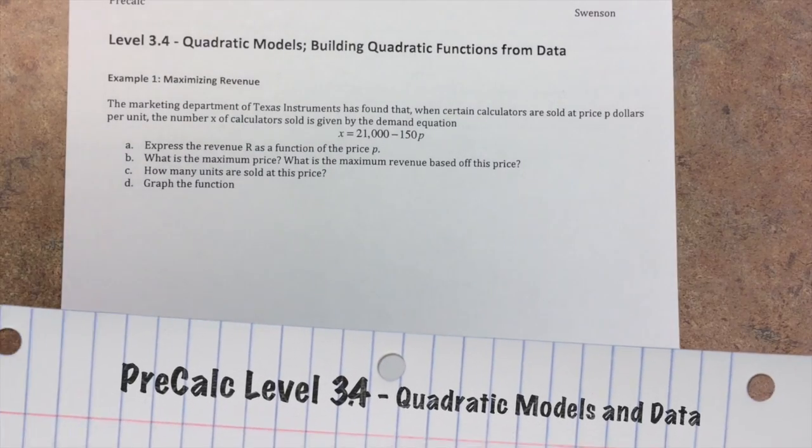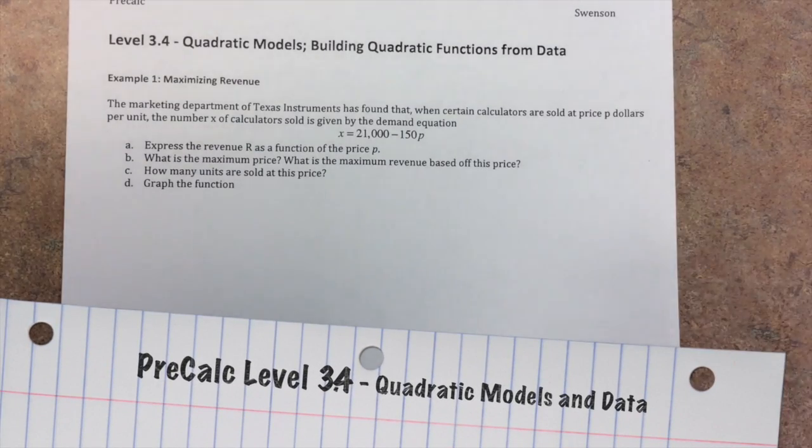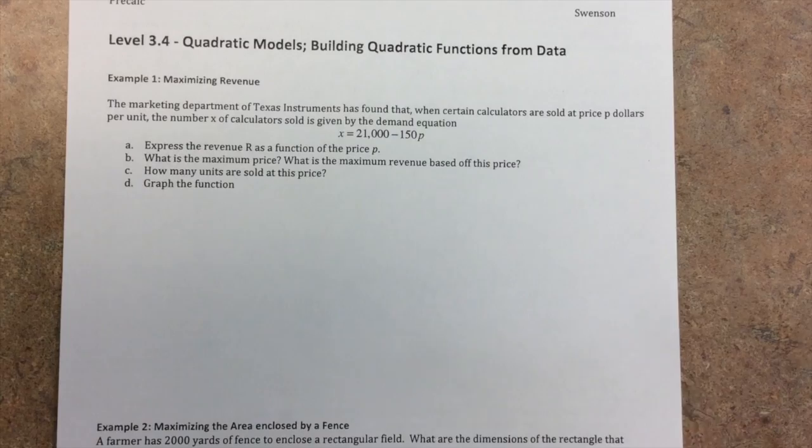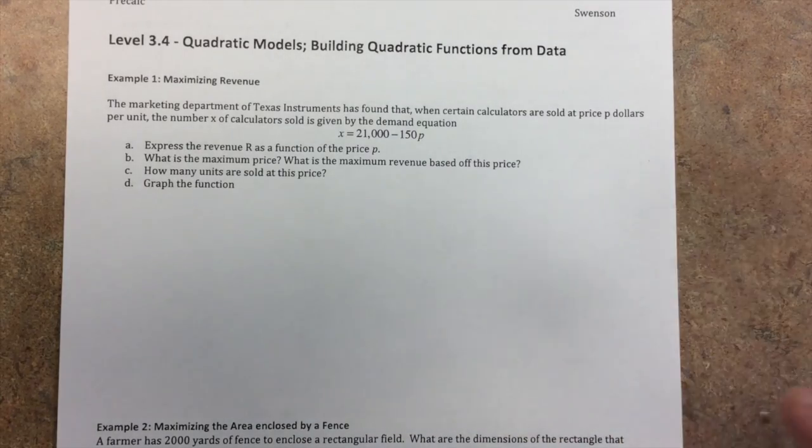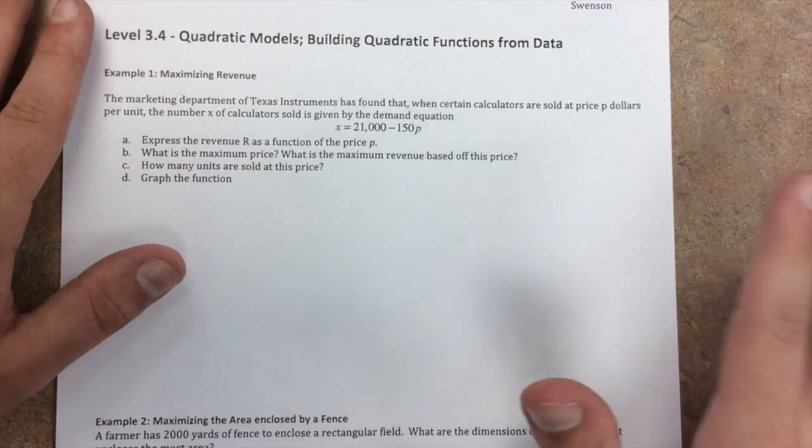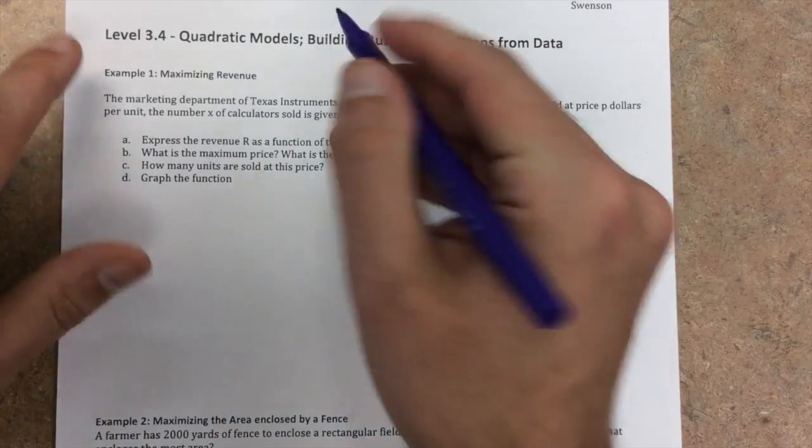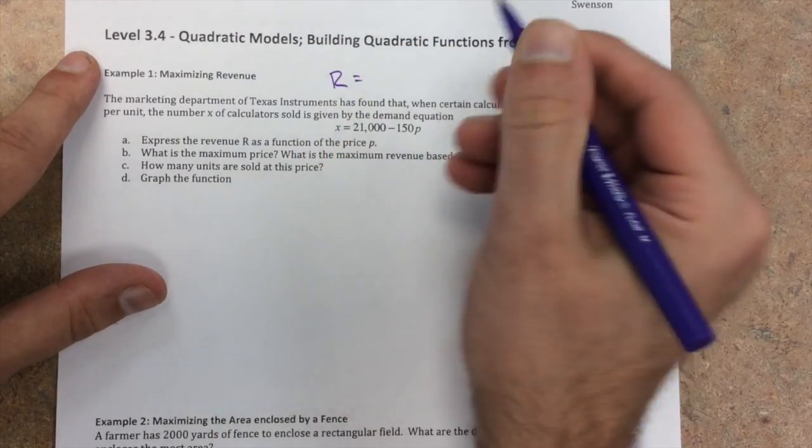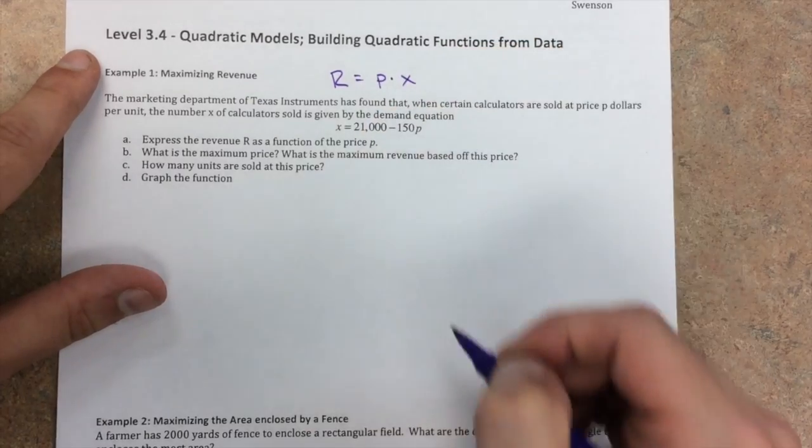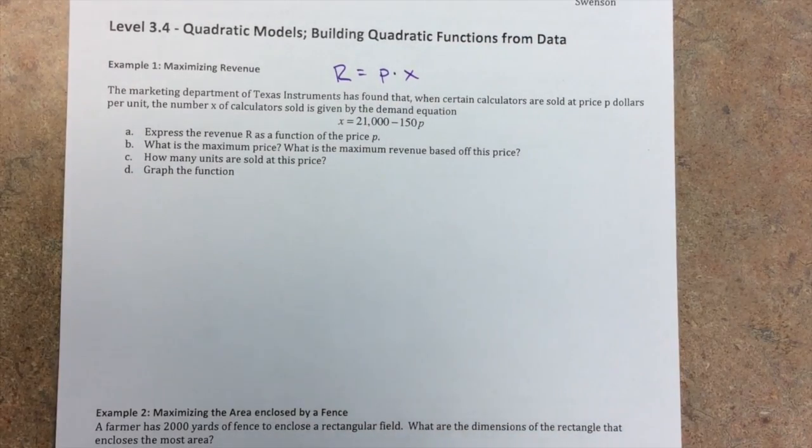Level 3.4 is about quadratic models and building quadratic functions from data. We're going to be doing three story problems and one problem that's going to involve our calculator, so make sure that you have that handy. Okay, so the marketing for the first one, maximizing revenue, which we should see from economics, revenue equals the price times the units sold.